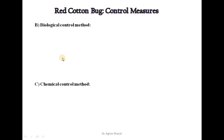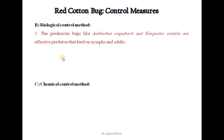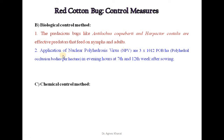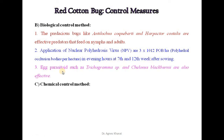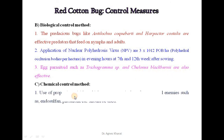For biological control, predaceous bugs like Antilochus and Harpactor are effective predators that feed on nymphs and adults. Application of nuclear polyhedrosis virus (NPV) in the evening hours at the 7th and 12th week after sowing. Egg parasitoids such as Trichogramma species and Telenomus are also effective.